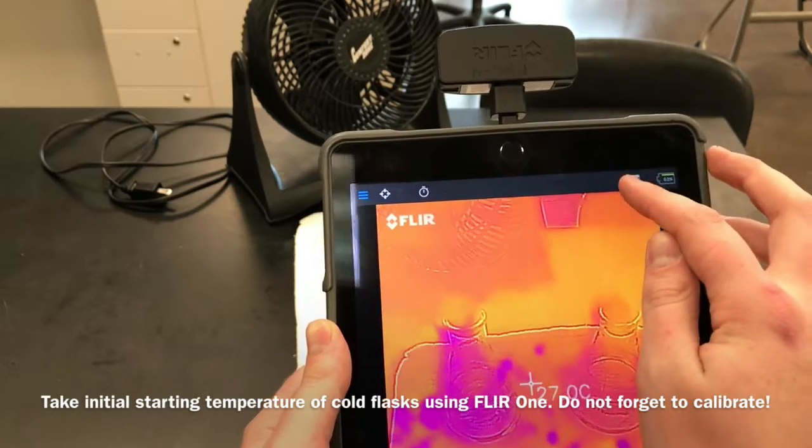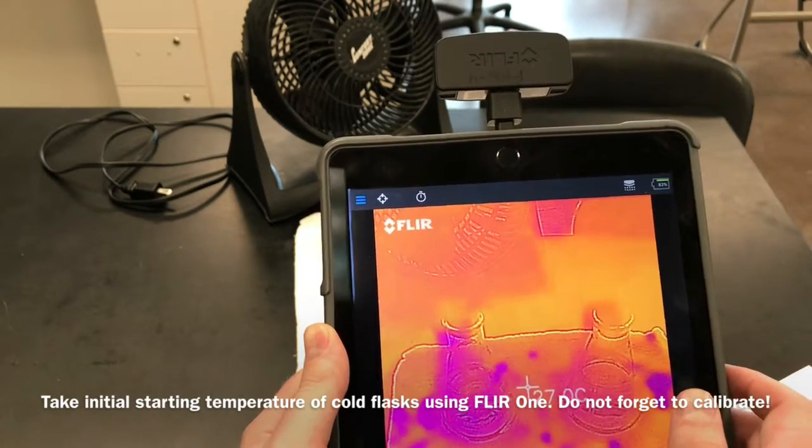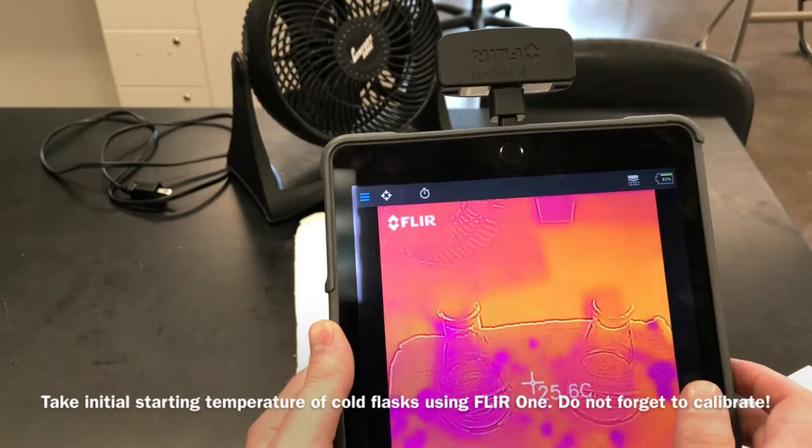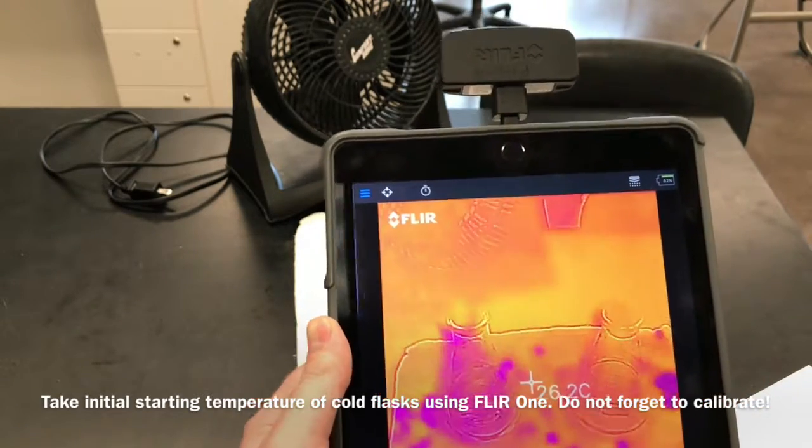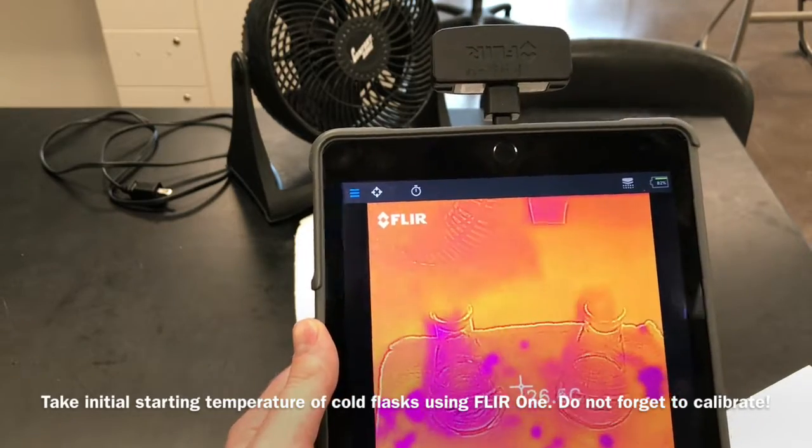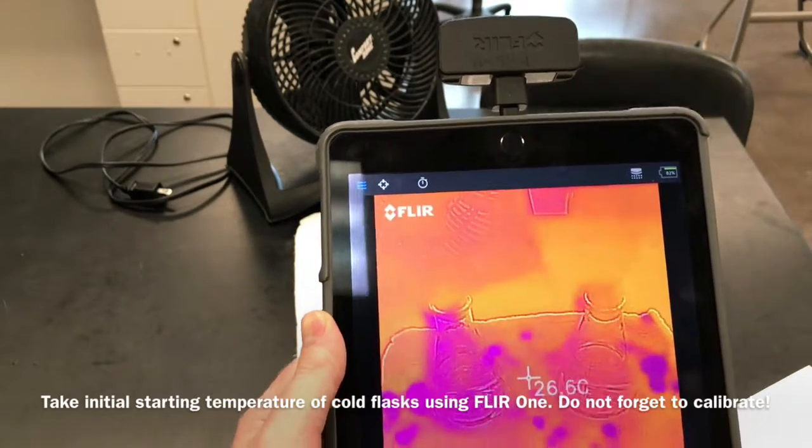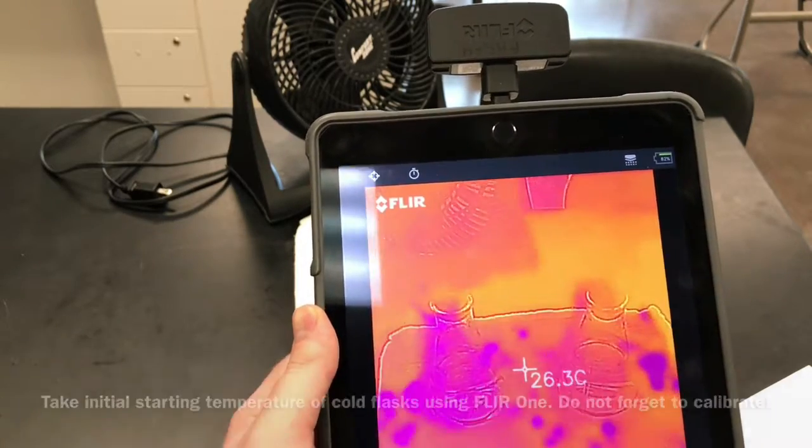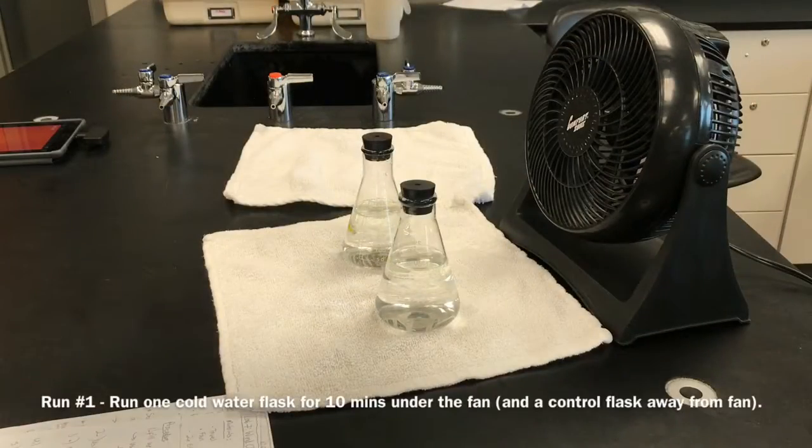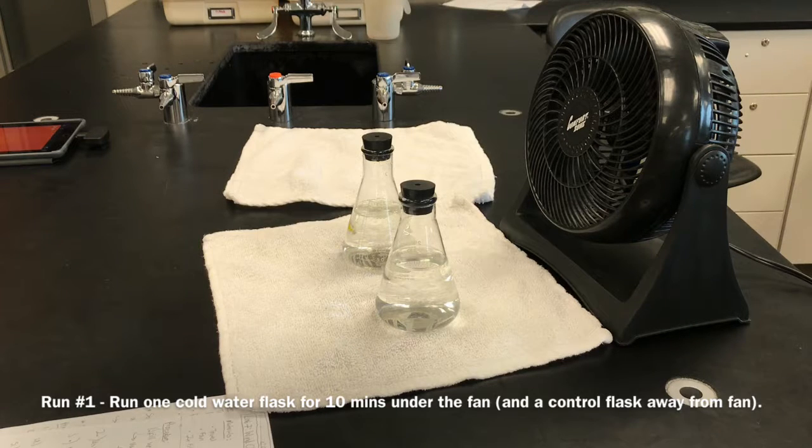Make sure to calibrate and then you're gonna take your initial picture. So take a picture of both of these flasks, that'll be your initial picture, and you're gonna use that to write down the values for the starting temperature of each of your flasks. Okay, so I got my initial picture taken for the two cold water flasks.